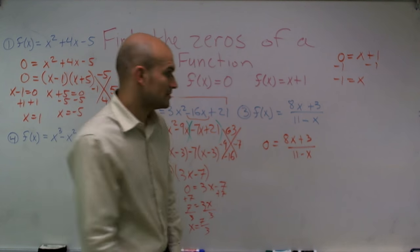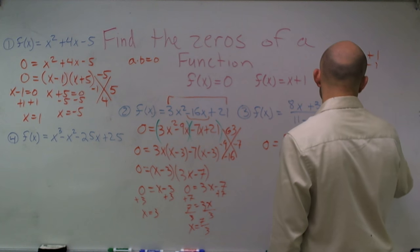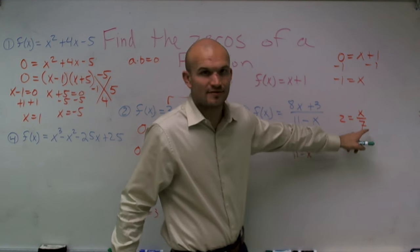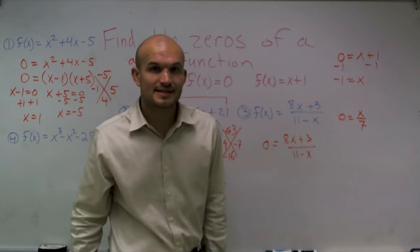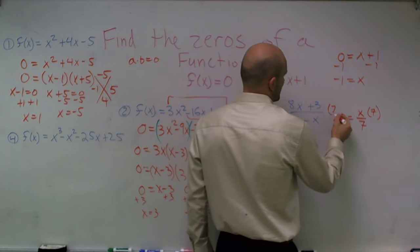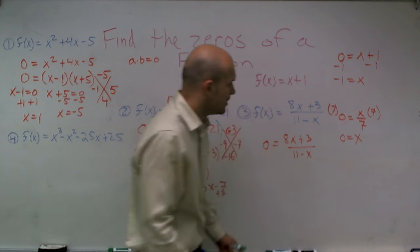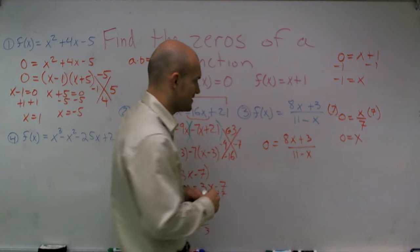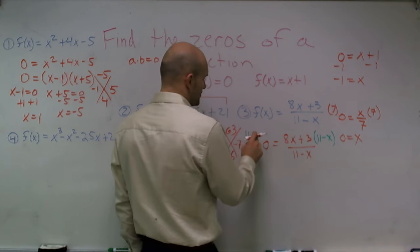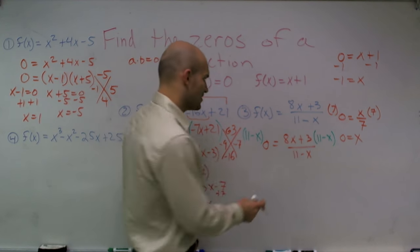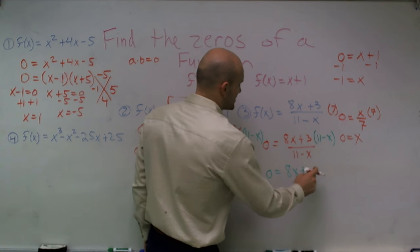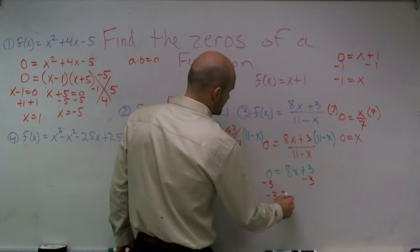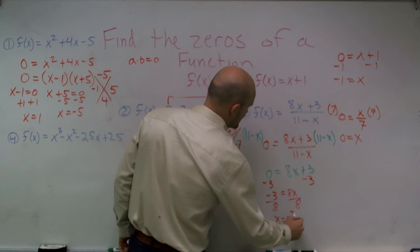Think about a simple example: 0 equals x over 7. To solve for x, I need to get rid of the 7 by multiplying by 7 on both sides, giving x equals 0. This problem is no different — I have 11 minus x on the bottom of my fraction. To get rid of it, I multiply by 11 minus x on both sides. Any number times 0 is 0, so I get 0 equals 8x plus 3. Subtracting 3 and dividing by 8, x equals negative 3 eighths.